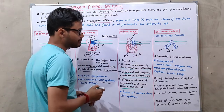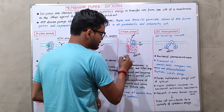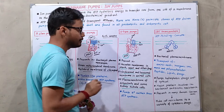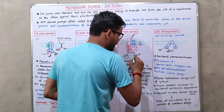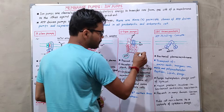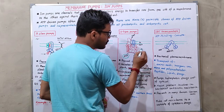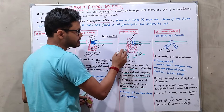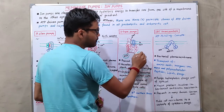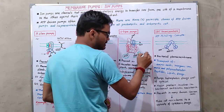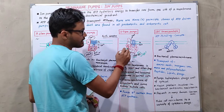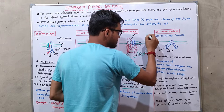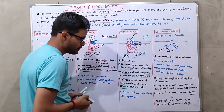V-type pumps use ATP hydrolysis — converting ATP to ADP and one inorganic phosphate. The energy released from this inorganic phosphate is used to pump hydrogen ions (H+) out of the membrane, rather than for ATP synthesis.